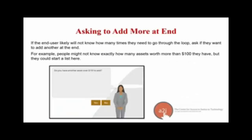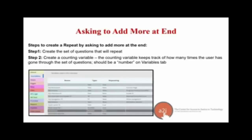The second way to do repeat loops is to ask the end user if they want to add any more at the end. This way has six steps, and you use it when the end user likely will not know how many times they need to go through the loop. For example, people might not know how many assets over $100 they have, but they can start going through the list and you ask 'do you have any more?' The counting variable — here it's 'asset count' — is still a number, and repeating is false.